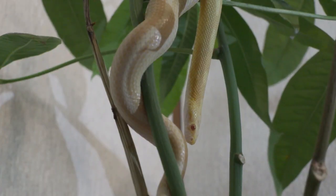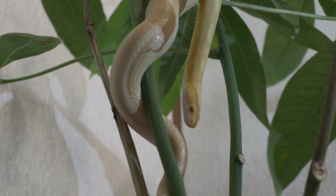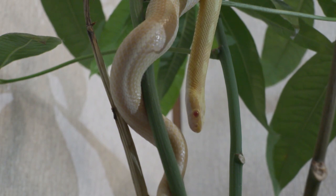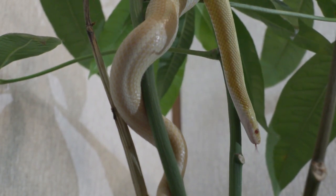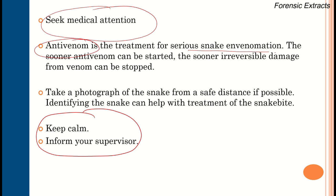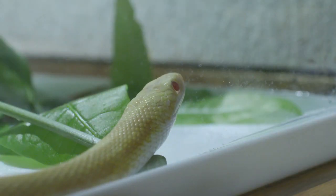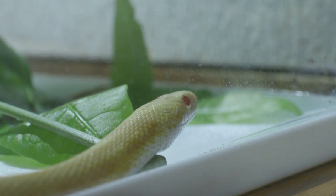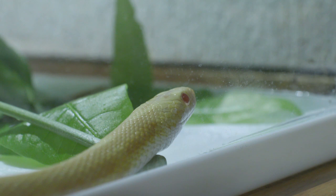First, always seek medical advice in snake bite — do not create panic, stay calm, and inform your supervisor. Anti-venom is the treatment of choice for serious snake envenomation; starting it sooner prevents irreversible damage. Always take a photograph of the snake from a safe distance to help identify the species — whether poisonous or non-poisonous — so it can help in treating the patient.